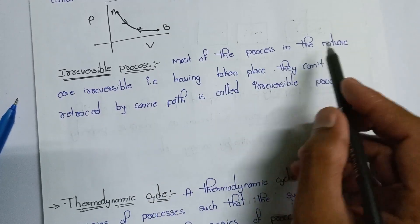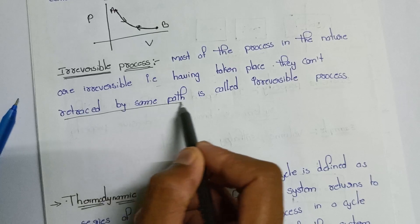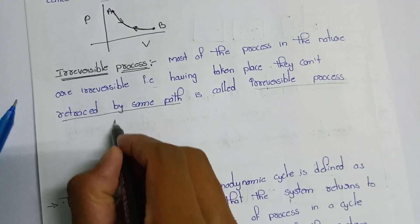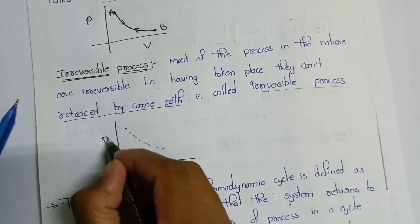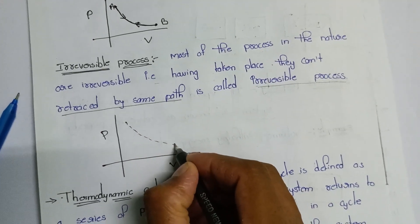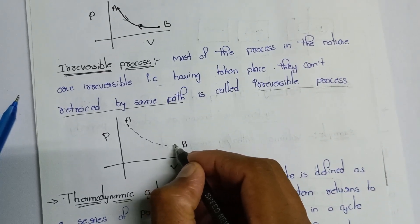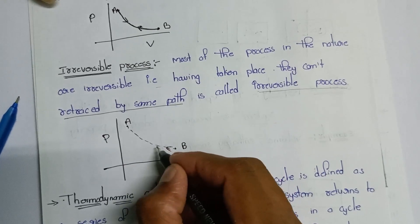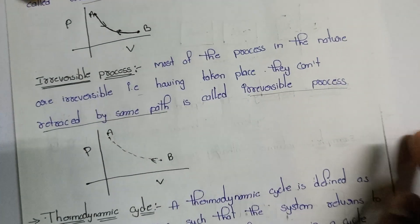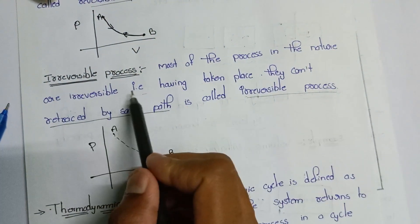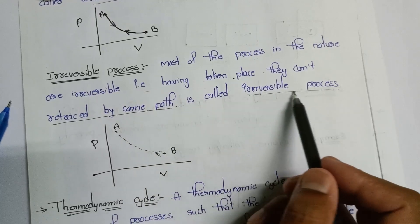Most of the processes in nature are irreversible — that is, having taken place, they can't be retraced by the same path. This is called an Irreversible Process.